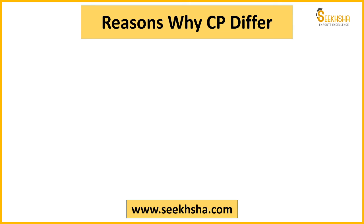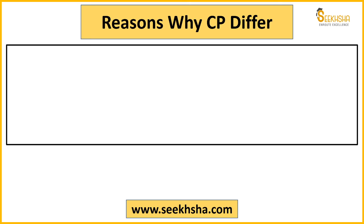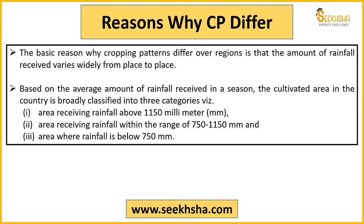India is a diverse country and cropping patterns are not the same across the whole country. Different cropping patterns are followed in different places. The basic reason is rainfall — the biggest reason is water, because rainfall varies from one place to another. If we divide India's agriculture into three broad areas: one where rainfall is more than 1150 mm, another where it is between 750 mm and 1150 mm, and a third where it is below 750 mm.